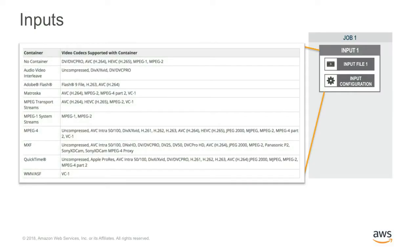This is where VOD and Live really separate. With Live, we're trying to get a stream into the cloud in very specific formats — RTMP, Zixi, RIST. When you get to VOD, you can use a very wide range of not just codecs but also the wrapper of that codec. That's really a big differentiator. If you have a library full of masters, you would use our video on demand service MediaConvert to handle that.